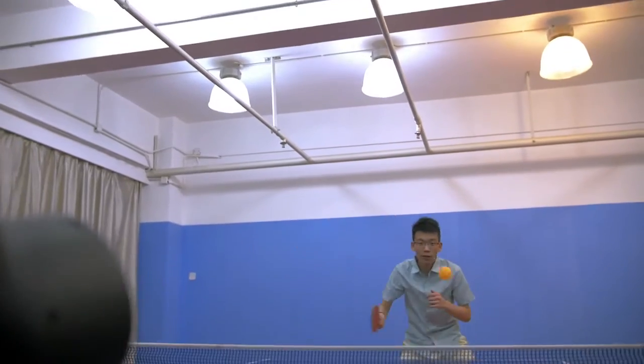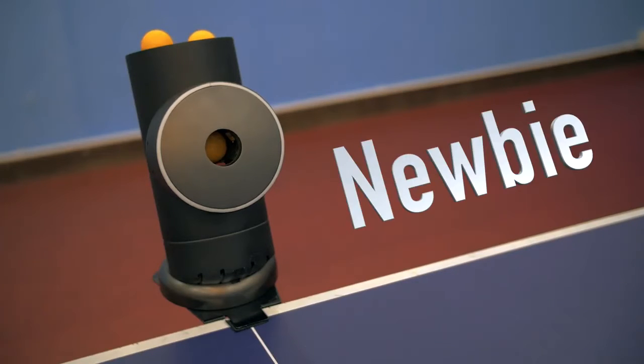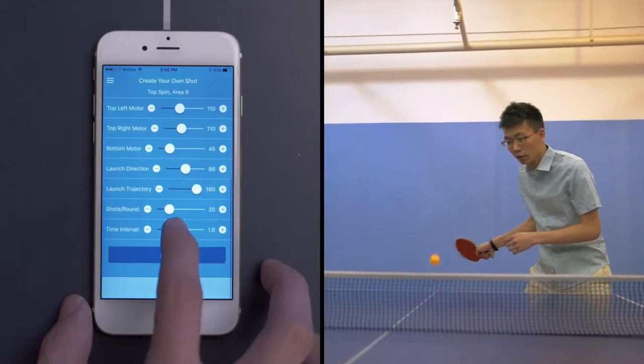TrainerBot lets you pick a setting that's perfect for you. Beginners can practice their forehand with slow, easy shots. Just choose a location, spin type, and a slow interval.